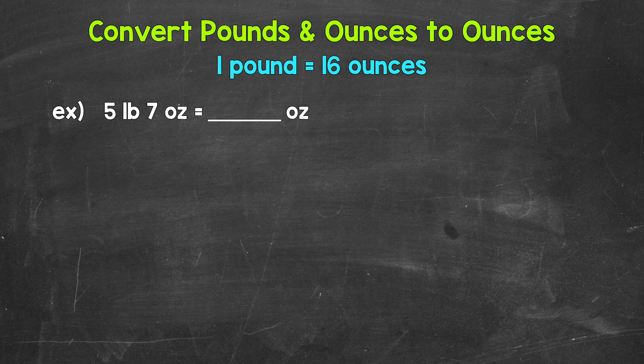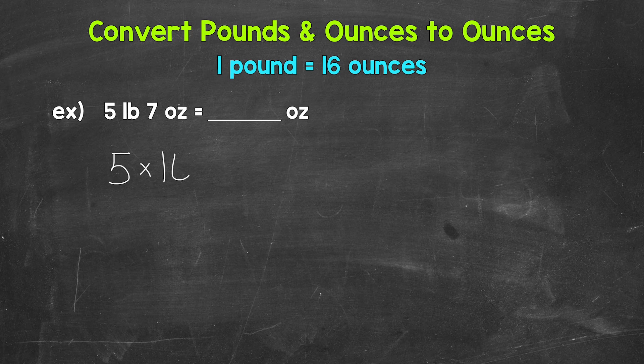In order to convert this to ounces, all we need to do is convert five pounds to ounces and then add the seven ounces to whatever we get for that. Again, one pound equals 16 ounces. So to convert five pounds to ounces, we multiply by 16 — five times 16 gives us 80. So five pounds equals 80 ounces.